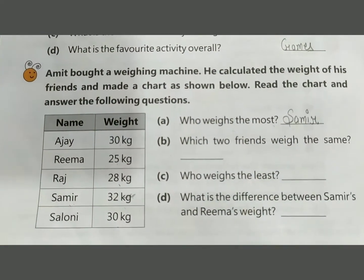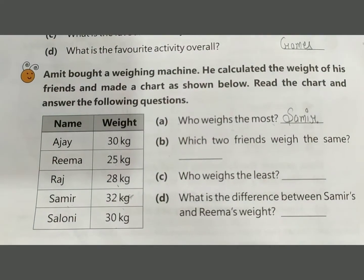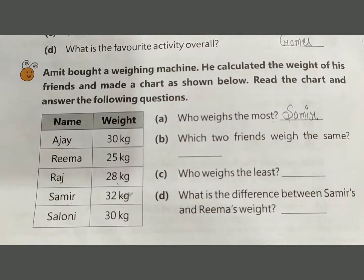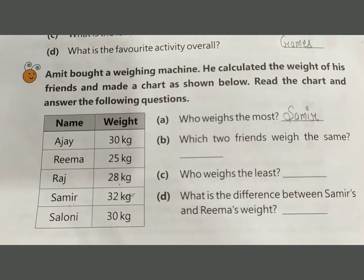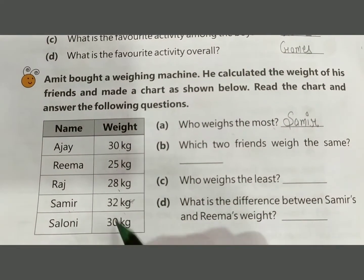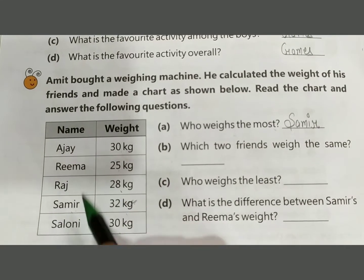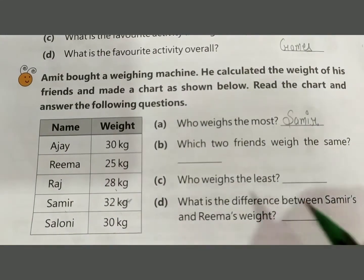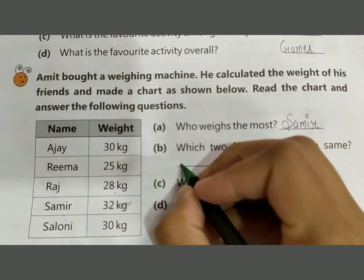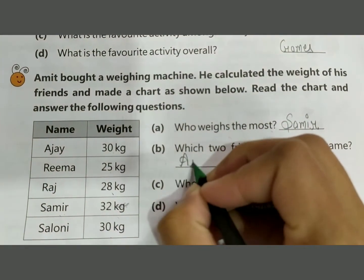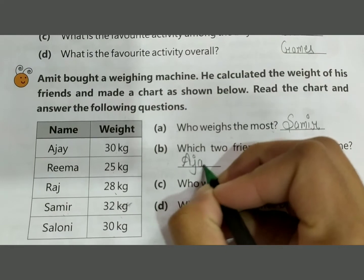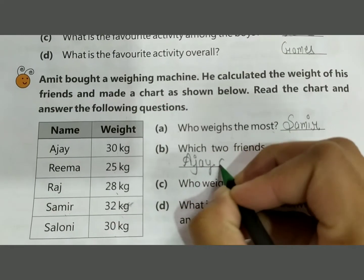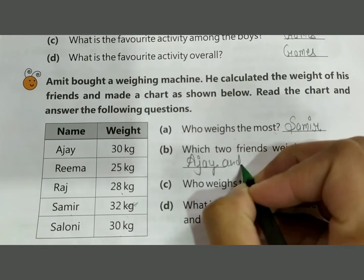Next: which two friends weigh the same? 30 kg — that is Ajay and Saloni. Their weight is the same. Write Ajay and Saloni.